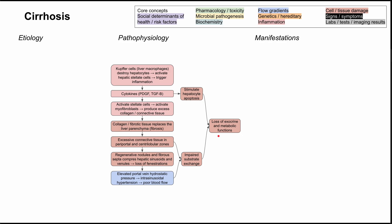Before we talk about the manifestations, let's talk about the varied etiology of cirrhosis and where these etiologies insert themselves into this pathway. There are two big buckets: things that cause hepatotoxicity and things that cause hepatitis — foreign exogenous materials that are toxic to the liver, and those that cause inflammation of the liver. There are also a few vascular causes of cirrhosis that we'll cover as well.